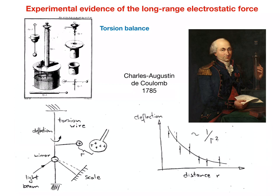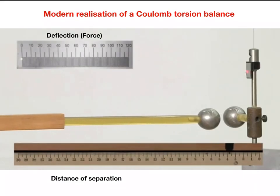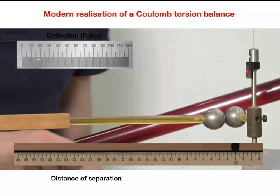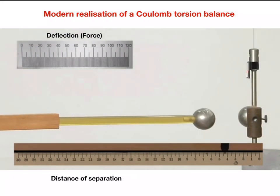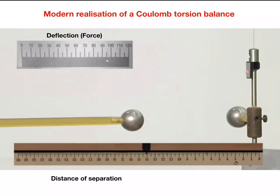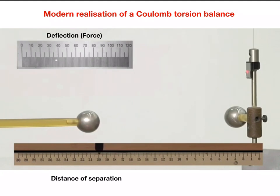Coulomb showed in this way that the deflection — a measure of the force acting on the charged sphere — is a function of distance according to 1/r², where r is the distance between the two charges. This is a modern realization of Coulomb's torsion balance. The torsion wire with mirror and laser spot visible are on the right. The two conducting spheres are charged and, since they are in contact, carry the same amount of charge with the same polarity. Withdrawing the left sphere shows how the Coulomb force on the right sphere depends on distance.